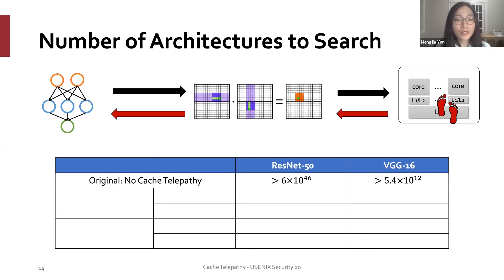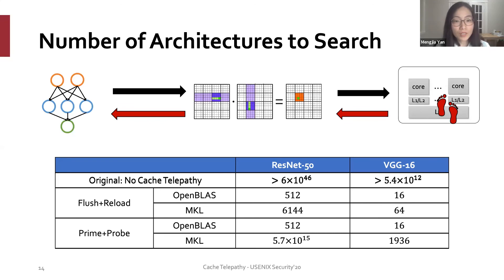You can see that without cache telepathy, the search space is intractable. Using cache telepathy, most of the time, we can significantly reduce the search space to a reasonable size. Outlier exists when using prime probe to attack MKL-based ResNet-50. We provided detailed examination in the paper.